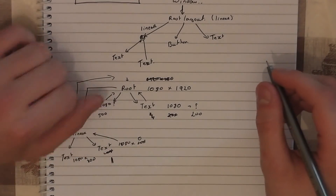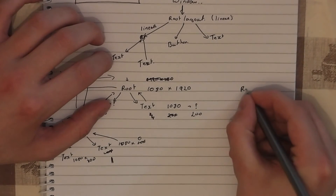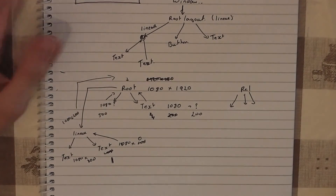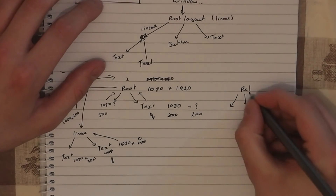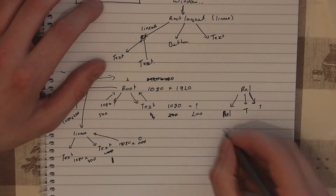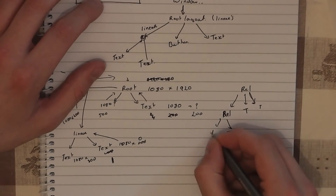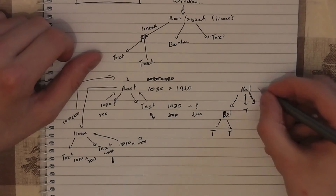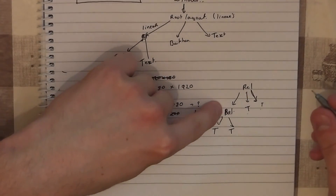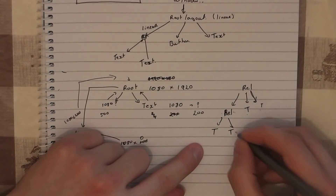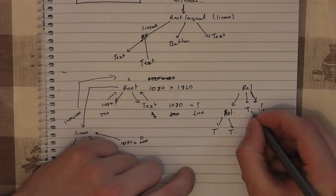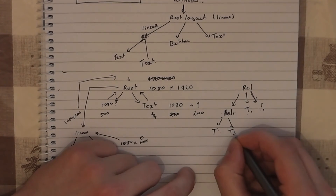Relative layouts, by the way, do two measure passes — that's a guarantee. So if you have a relative layout with three children, it has to measure every child twice no matter what. So for a relative layout with two text views inside, plus another nested relative layout containing two more text views: the inner relative layout measures its two children twice — that's two passes each. Then the outer relative layout has only finished its first measure pass and needs to measure everything again.